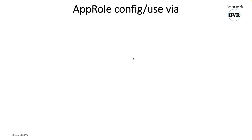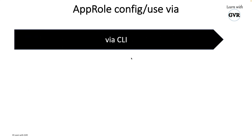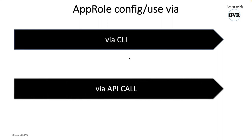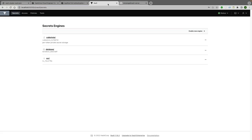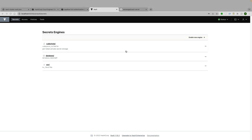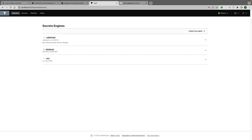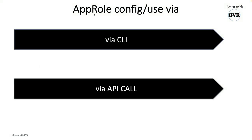AppRole can be used in two ways: via CLI or via API calls, but not fully via the UI. The vault UI only supports configuration management for AppRole - for the full capability of AppRole pull authentication, the API or CLI should be used.